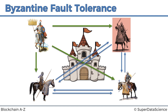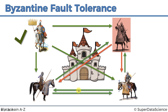What they've agreed is: relay what the general said to everybody else, then take the majority of the votes. The traitor, being the traitor, tells the others that the general said 'retreat' — green arrows mean attack, red arrows mean retreat. So the traitor tells the other two generals the general told him to retreat. The other loyal generals simply relay the truth: the general told them to attack.